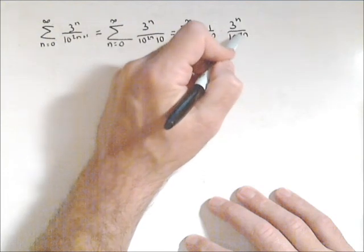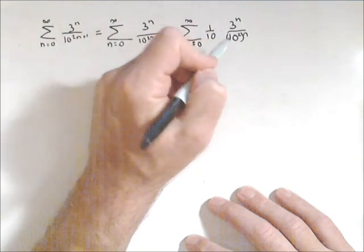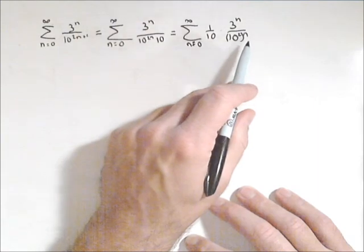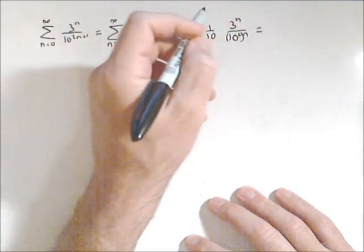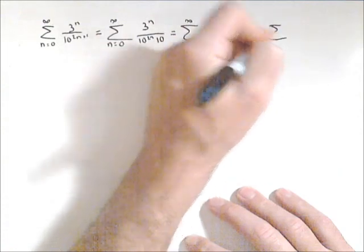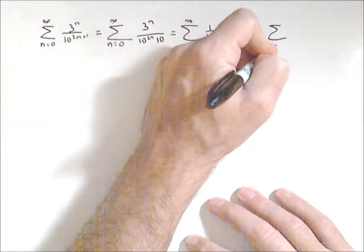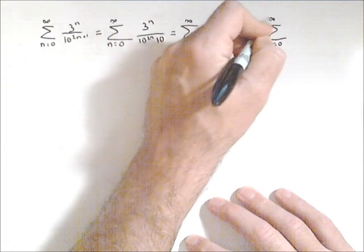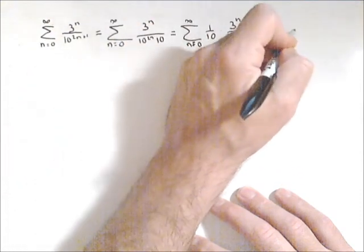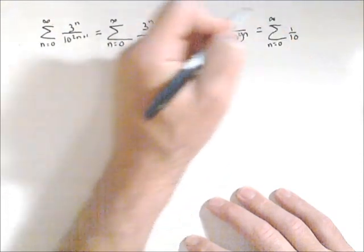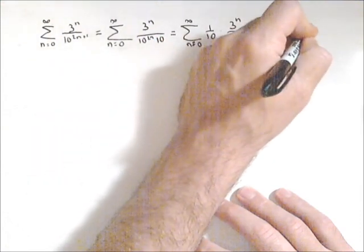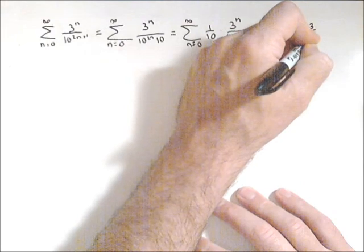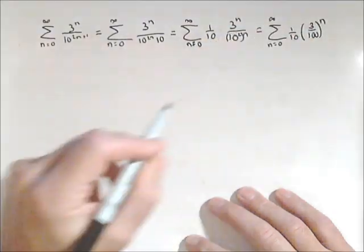The other thing in the denominator I'm going to think of as 10 squared to the n. So I can rewrite this from n equals 0 to infinity of 1 tenth, and now 10 squared is 100, then I have 3 to the n over 100 to the n. I can write that as 3 over 100 to the nth power.